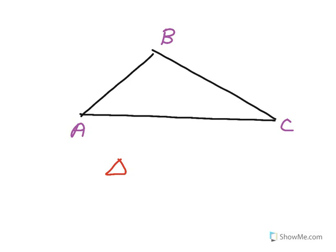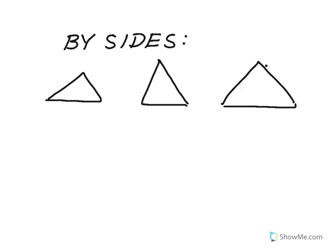The way that we name a triangle is we name all three vertices. We use a little triangle sign, and we would call this triangle A, B, C. It doesn't matter the order — I could start with B and say triangle BAC or BCA, or I could start with C. The order doesn't matter.